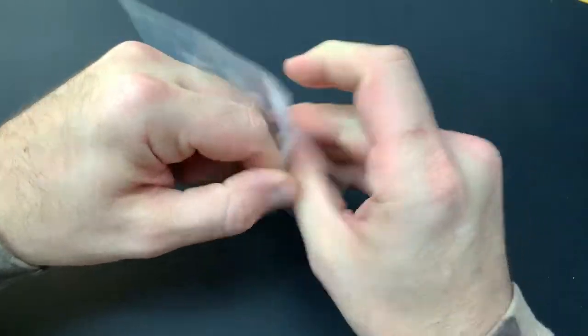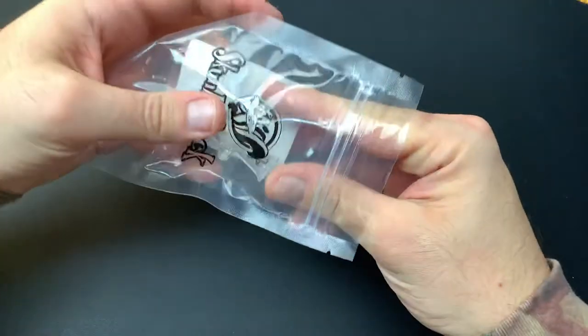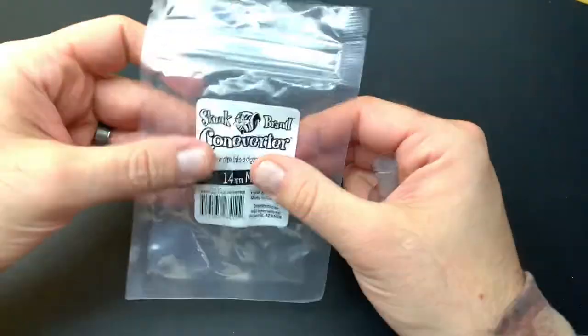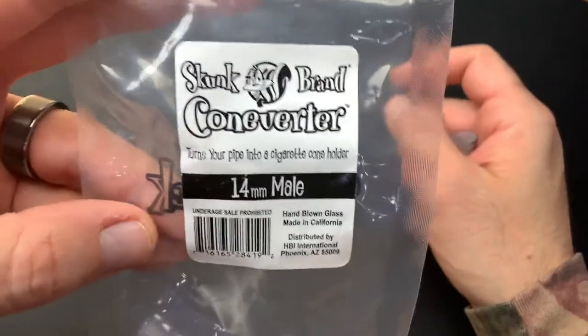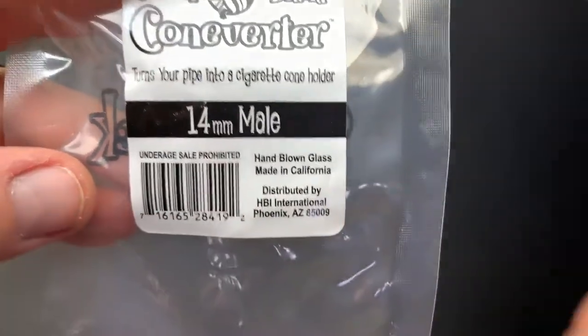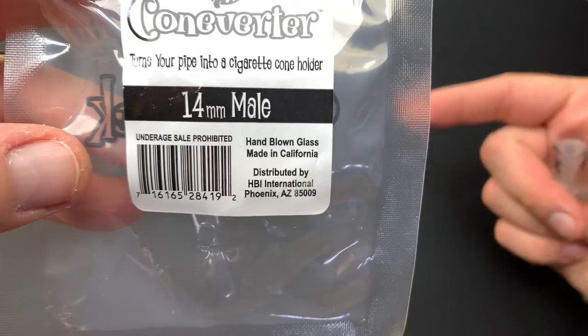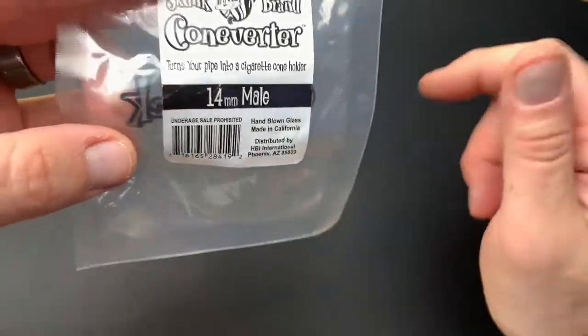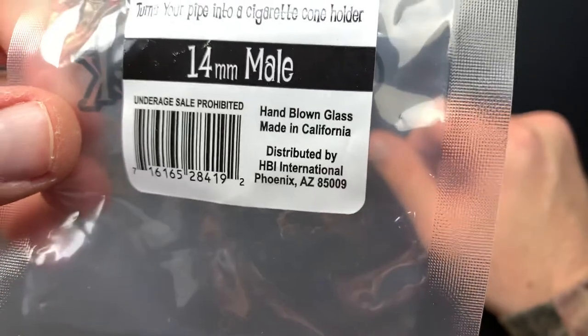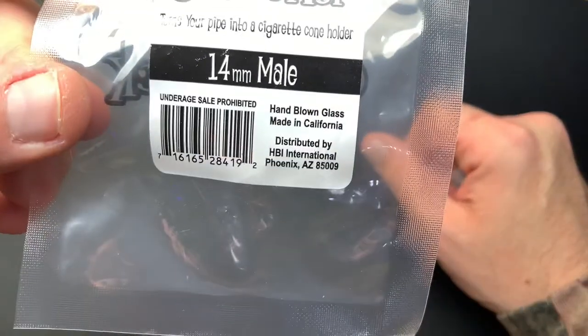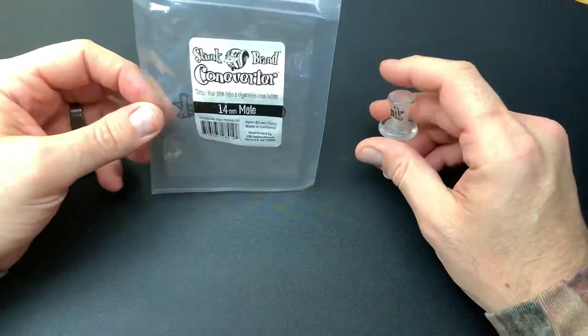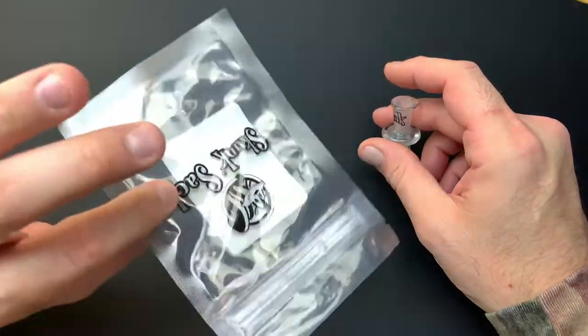Here's the converter itself. I got the 14 millimeter one. There's the Skunk brand converter - turns your pipe into a cigarette cone holder, 14 millimeter. And there you go, there's HBI, that's the company that does Raw, Elements, and everybody else through the American distribution chain. They're the ones that handle everything and get all this stuff sorted out throughout the United States from all these international companies.